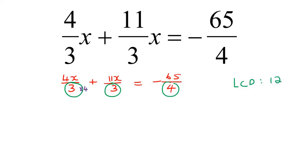We multiply this one by 4. By the way, some of you might ask, can't I use 24 instead? And yes, you absolutely can. What will happen is you'll just have to keep simplifying your answer, and you'll get the same answer as someone who uses 12. So it doesn't always have to be the lowest common denominator — it just has to be a common denominator. You and a friend might get 12 and 24 respectively, but you'll arrive at the same answer.